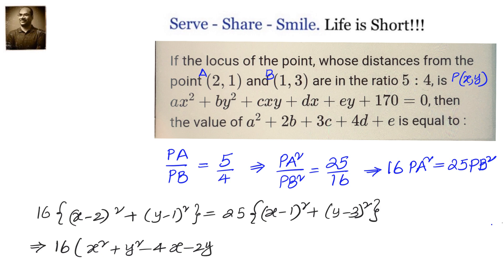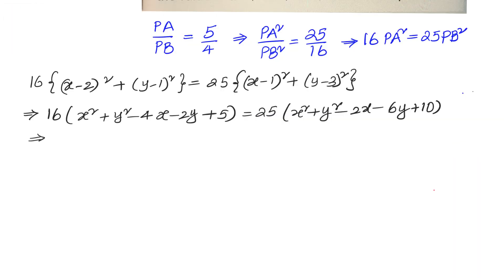This equals 25(x² + y² - 2x - 6y + 10), where 1² + 3² = 10. Let us multiply with 16 and 25 on both sides and simplify.